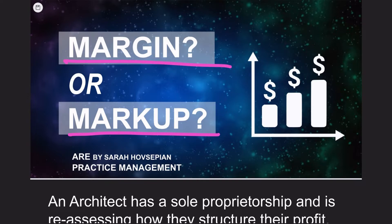The difference in these terms can mean the difference in actually reaching your target profit or missing it by a lot. Questions I'll cover include: What are the formulas for margin and markup? Which method should one use when deriving a fee for your architectural services? How does margin show up on a profit and loss statement? And finally, how do you guarantee meeting your target profit even if the cost of the product or service increases?